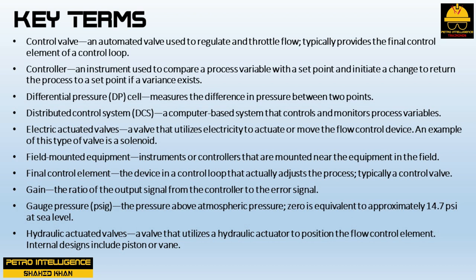A distributed control system (DCS) is a computer-based system that controls and monitors process variables. An electric-actuated valve utilizes electricity to actuate or move the flow control device; an example is a solenoid valve. Field-mounted equipment refers to instruments or controllers mounted near the equipment in the field. The final control element is the device in a control loop that actually adjusts the process, typically a control valve. Gain is the ratio of the output signal from the controller to the error signal. Gauge pressure (PSIG) is the pressure above atmospheric pressure; zero is equivalent to approximately 14.7 PSI at sea level. Hydraulic actuated valves utilize a hydraulic actuator to position the flow control element; internal designs include piston or vane.